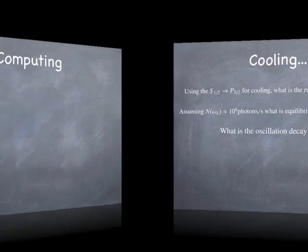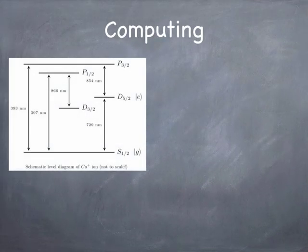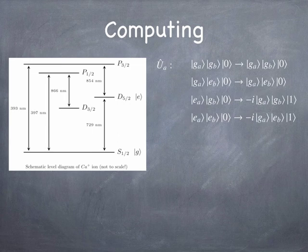Finally, let's look at computing itself. Remember that the level structure for calcium ions looks something like this, the levels that we're interested in. And remember that the U transition or the U operator has the following effect on the various states. We've got ion A, ion B, and then the bus, or harmonic oscillator motion, center of mass motion of the two ions together, the so-called quantum bus.